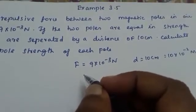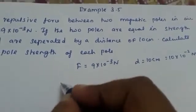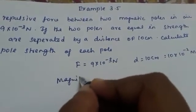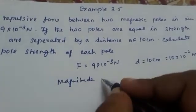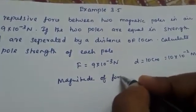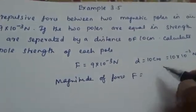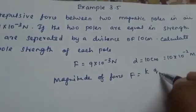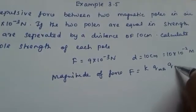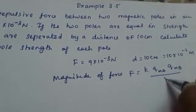We can write the force, the magnitude of force. So this magnitude of force using Coulomb's law is F = K × QMA × QMB / R².